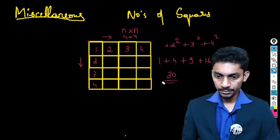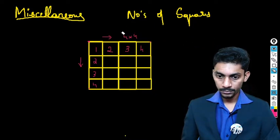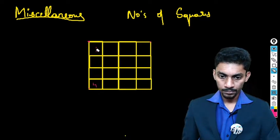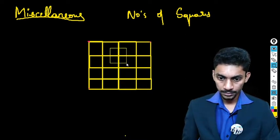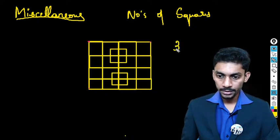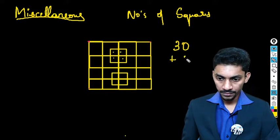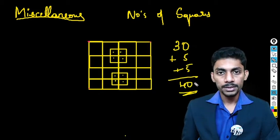If the same question is asked with one extra box on each side — making it a 5×4 or extended grid — then with the additional outer square, the answer becomes 30 + 10 = 40. Simple.